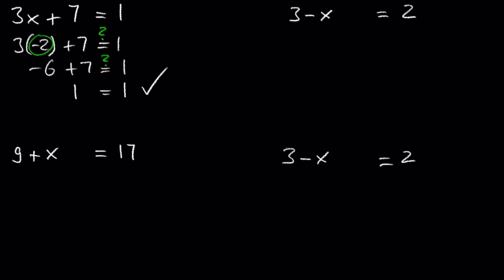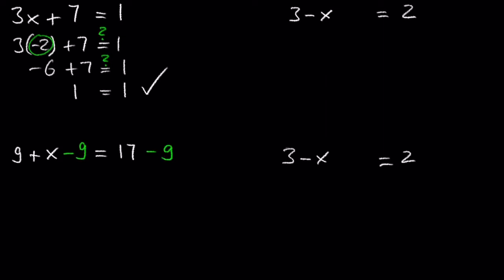Let's do another example: 9 plus x is equal to 17. Feel free to pause the video and try to isolate x by subtracting 9 from both sides. 9 minus 9 is 0, so x plus 0 is equal to 8, and x is equal to 8. The solution is 8.